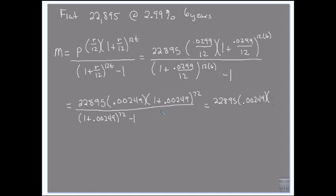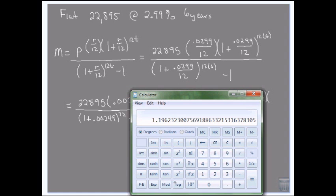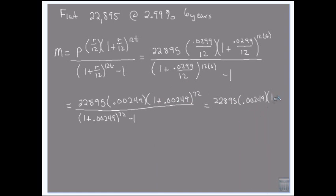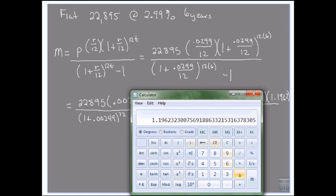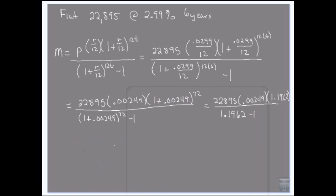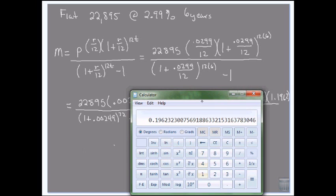So all I've done is this with the exponent, so it's 1.1962. And then I'm going to subtract 1 from it, and I get 0.1962.